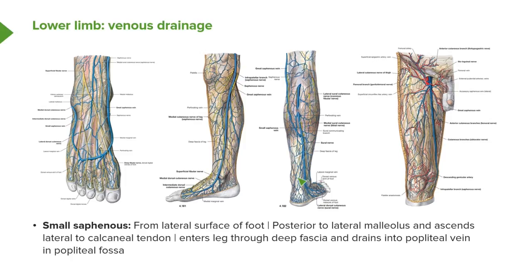The small saphenous comes from the lateral surface of the foot — from the dorsal venous network near the fifth digit. This time it runs posterior to the lateral malleolus and all the way up the posterior calf. It enters through the deep fascia and passes into the popliteal vein within the popliteal fossa.